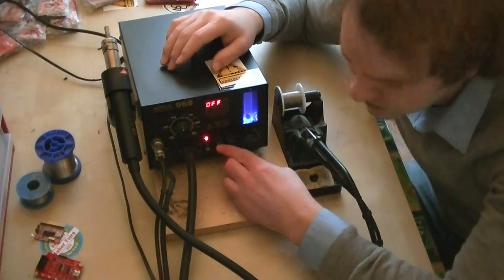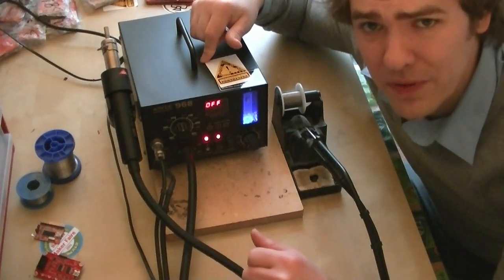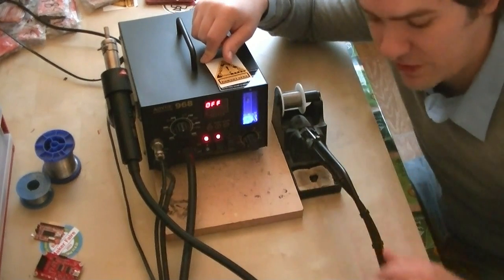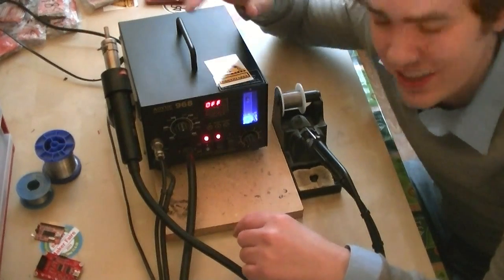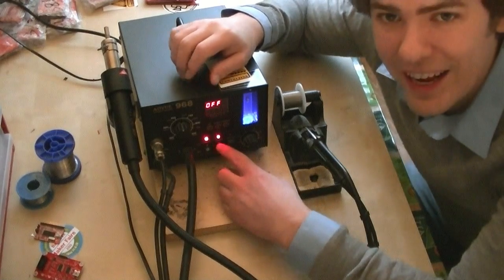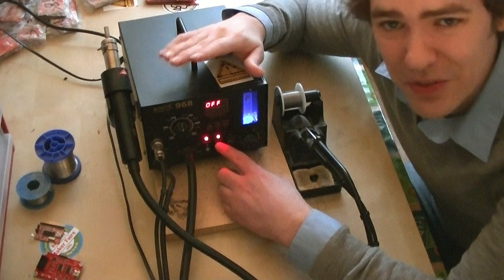The smoke extractor is this button, and it uses the pump from the rework station to suck the fumes through the tube, and blows them out of the rework tool here.